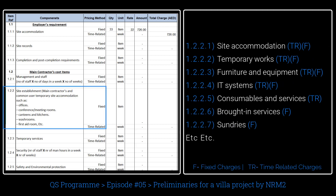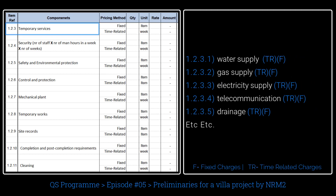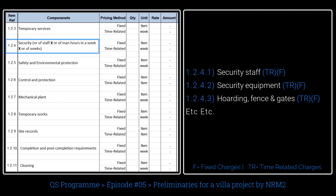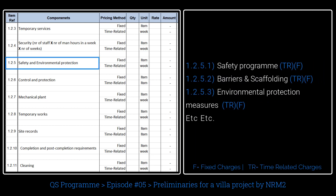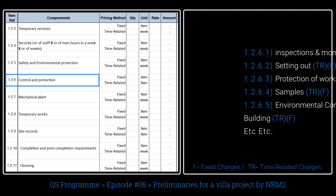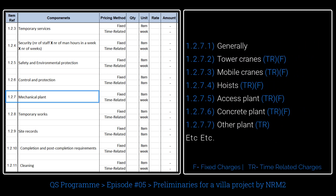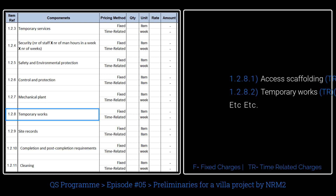Site establishment includes offices, meeting rooms, IT rooms, and first aid rooms. Furniture items may be fixed or time-related costs. Temporary services include water supply, gas, electricity, and telecommunication, etc. Security includes equipment, staff, fencing, and gates, etc. Safety and environmental protection includes safety programs, barriers, and safety scaffolding, etc. Control and protection includes survey, inspection, and monitoring, etc.